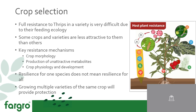The next consideration is crop selection. Full resistance to thrips in a variety is very difficult because of their feeding ecology — it's hard to stop them getting onto the plant and boring into cells. But some crops and varieties are less attractive to thrips than others, and if you can make your plant less attractive, they're more likely to move to a non-crop plant and attack that first.